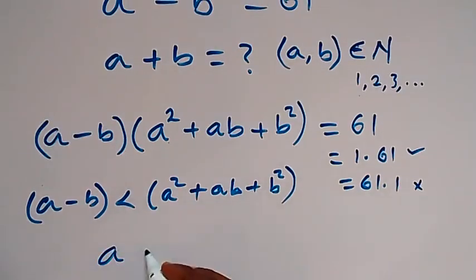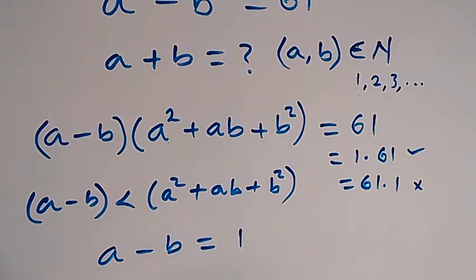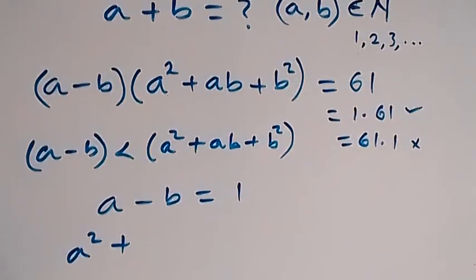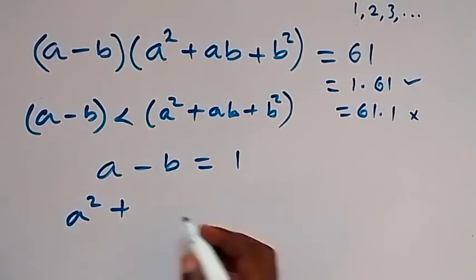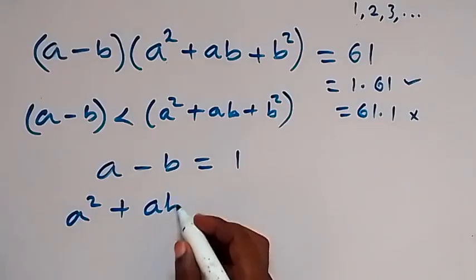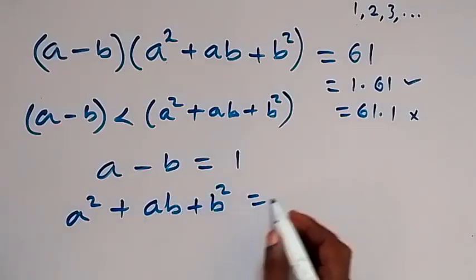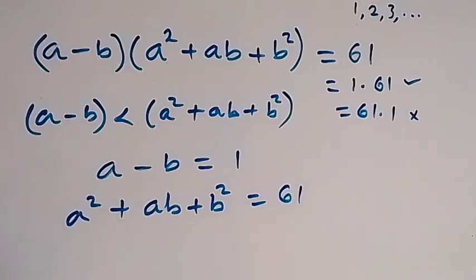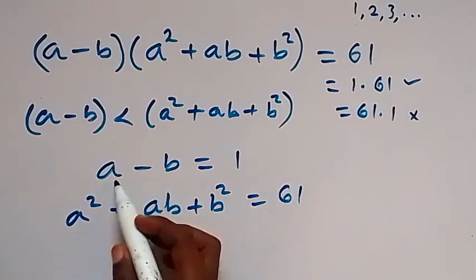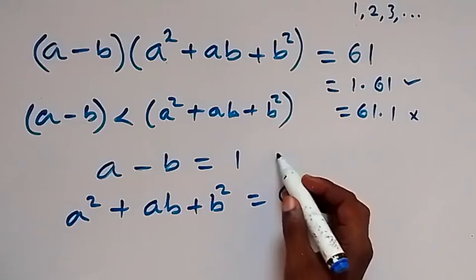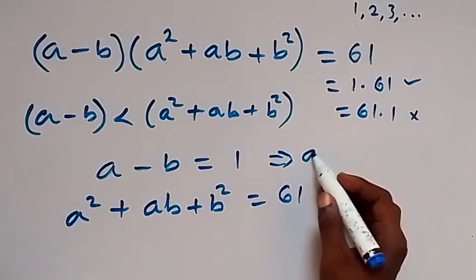So we equate: a minus b equals 1, and a² + ab + b² equals 61.